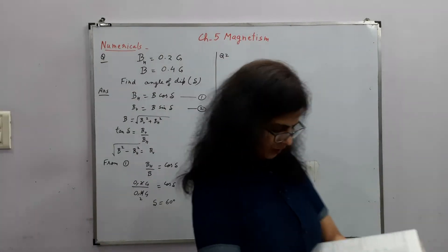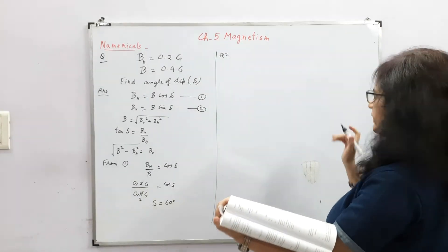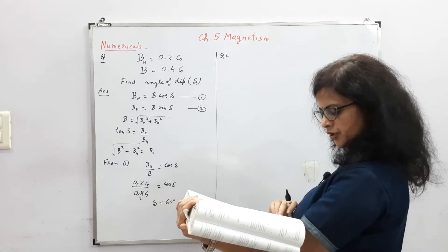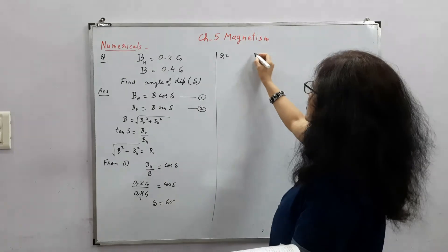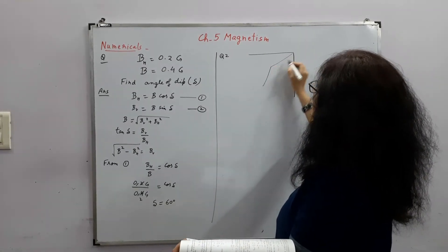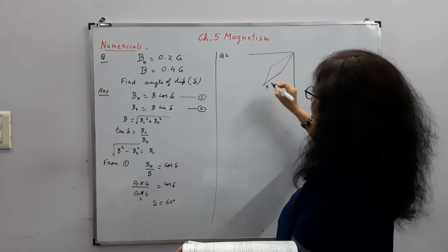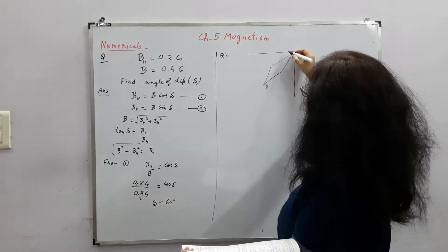A magnetic needle free to rotate in vertical plane parallel to the magnetism. So if we recall our diagram, whatever direction the magnetic needle points,